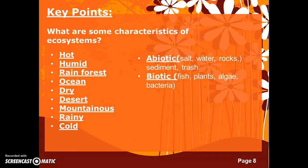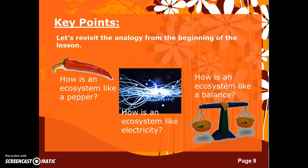All of these characteristics will be helpful to us as we move through our Synecdox process. When we think about the quote from the beginning — life is like a box of chocolates — we can use the same concept to create metaphors for ecosystems. For example, how is an ecosystem like a pepper? Or how is an ecosystem like electricity? How is an ecosystem like a balance? When we make these connections and form these relationships, it helps us to understand the concept.